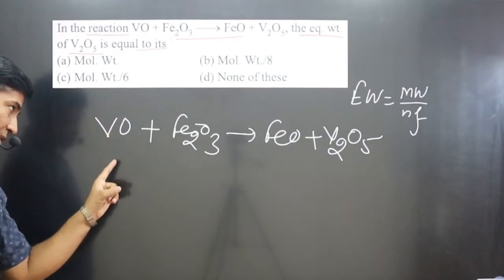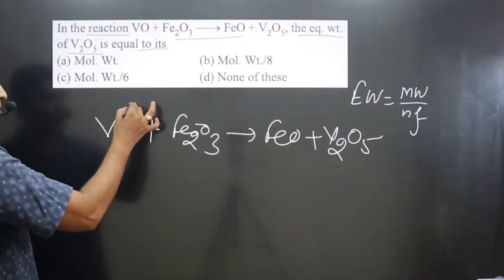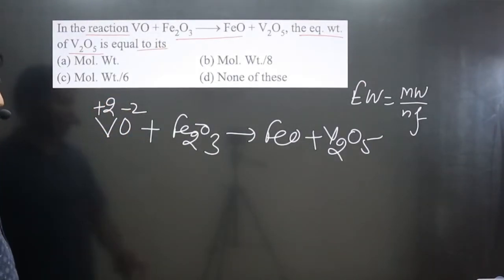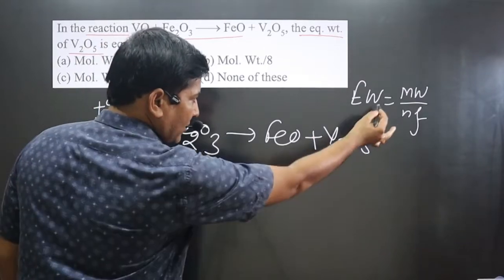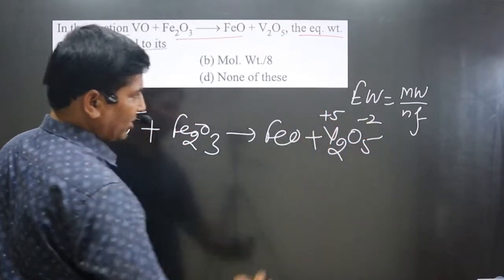In this case, if we calculate n factor value for this one, then we have to calculate oxidation number for only one V. Oxygen is minus two, then vanadium is present in plus five if you crisscross. So five will go on the left side, two will go on the other side. First one is positive, second one is negative.